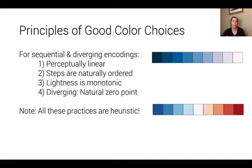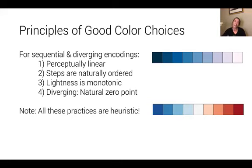We want our lightness to be monotonic — our brain is really well tuned to making sense of how light or dark something is, so we want that lightness to scale naturally with the values in our data. And if we're using diverging encodings, we want to have a natural zero point. A quick side note: all of these practices are heuristic, but let me break down each in a little more detail.